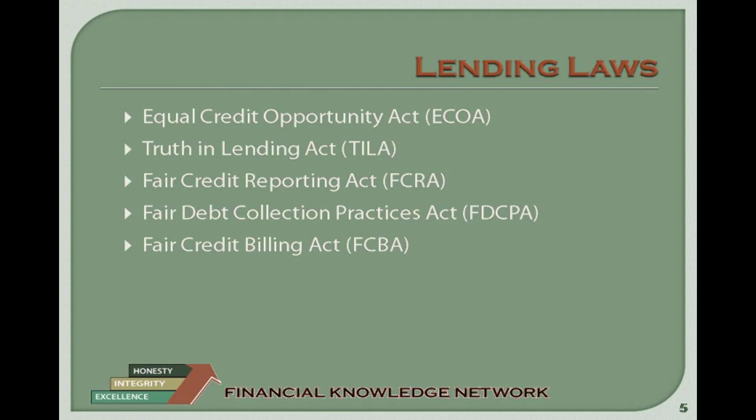Fair Credit Billing Act: After you get your loan, the Fair Credit Billing Act requires creditors to promptly credit payments and correct billing mistakes for open-ended accounts such as credit cards. It allows you to withhold payments on defective goods. Note that the Electronic Fund Transfer Act and the Truth in Lending Act also have methods for correcting billing errors. Examples of billing errors include a charge for something you did not buy, a charge that is different from the actual purchase price, an error in math where the total does not add up, or an interest miscalculation.